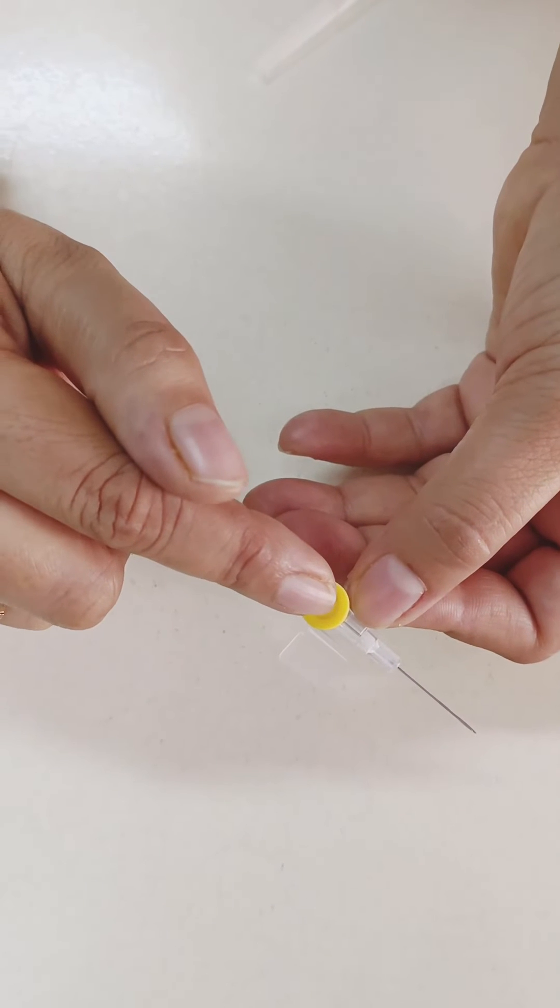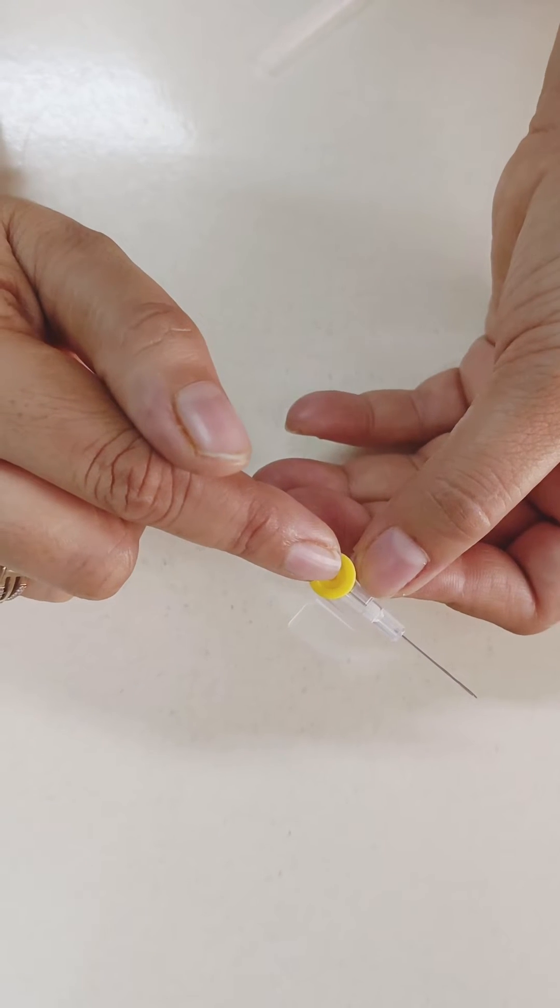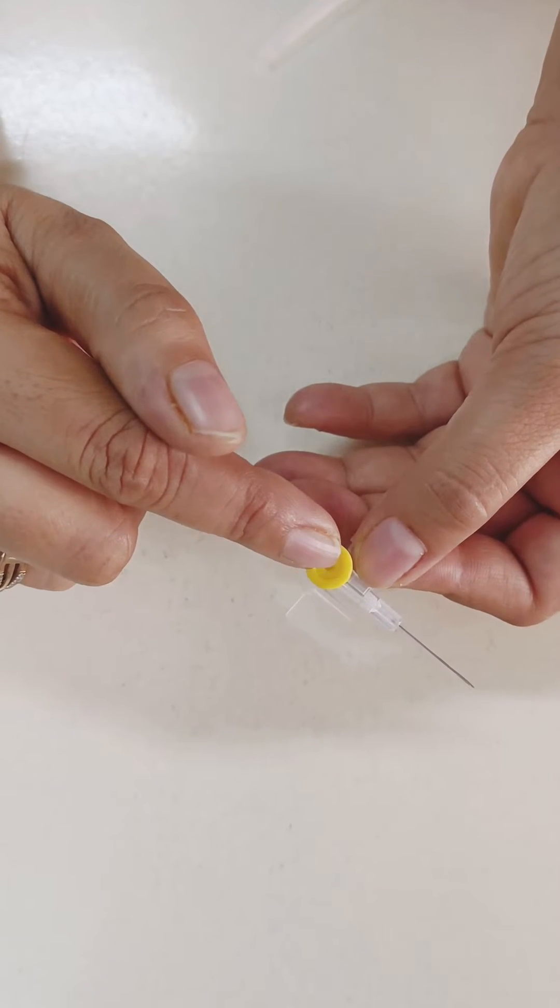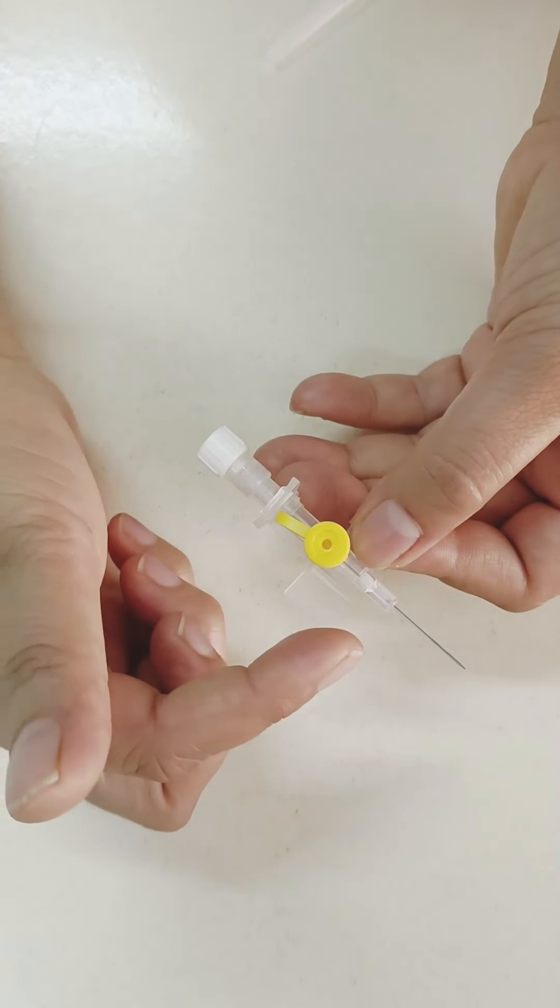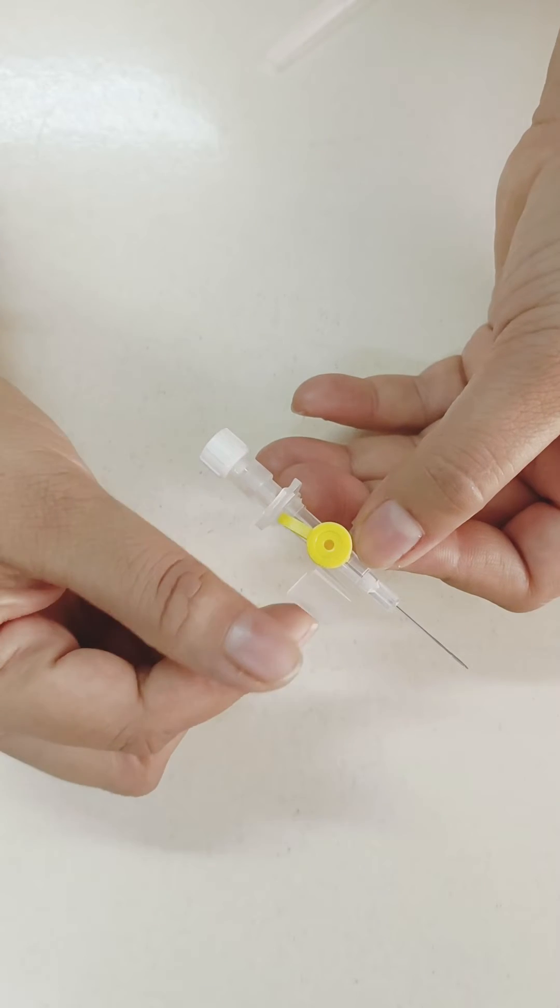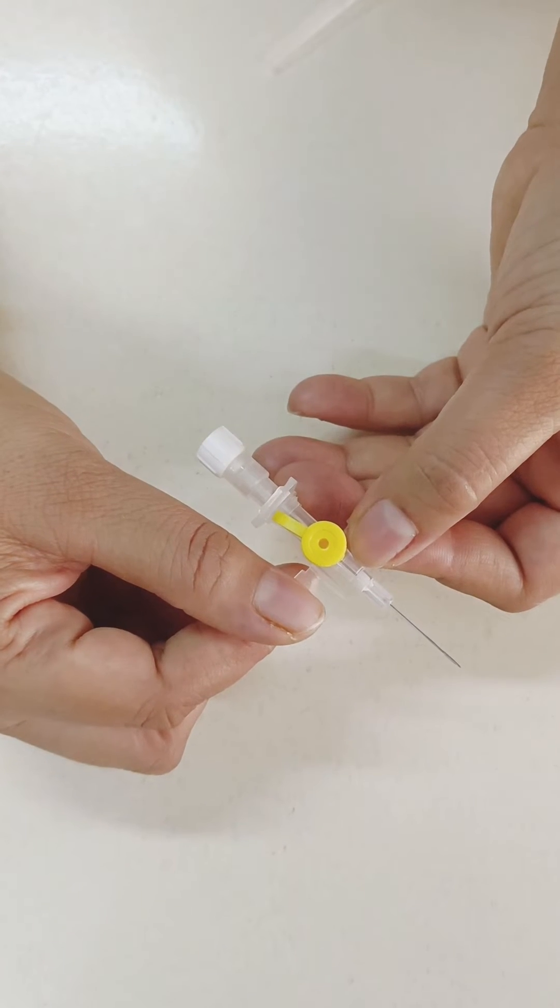This is yellow color, so it is 24g, external diameter is 0.7mm and length is 19mm and flow rate is approximately 20ml per minute.